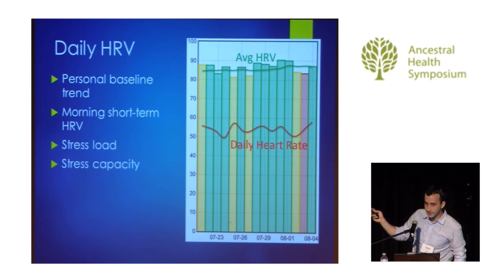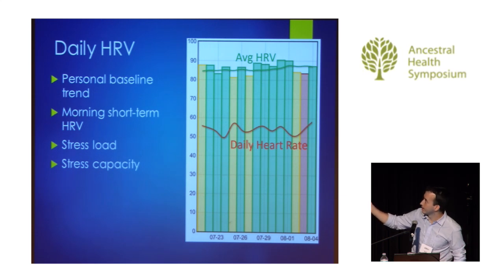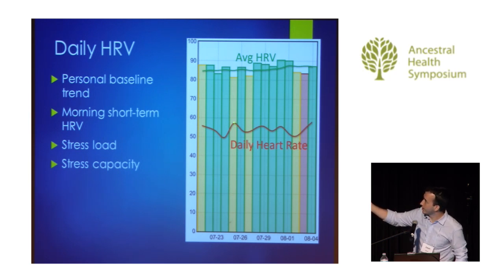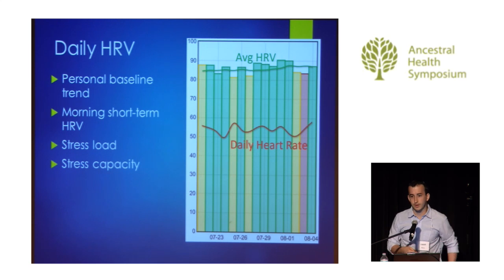Green means you're able to handle more stress that day. Yellow and red means you might consider doing some active recovery type exercises or some breathing exercises. You can also see that my resting heart rate — which is not heart rate variability — fluctuates quite a lot each morning: some days close to 60, some days down below 50. Heart rate is actually not always tracking with heart rate variability. On one day, my heart rate was higher but my HRV was lower. Whereas on August 4th, five days ago, my heart rate was higher but my HRV was still pretty high. That's why heart rate in and of itself can't always give us the picture of what we're looking for with our stress.